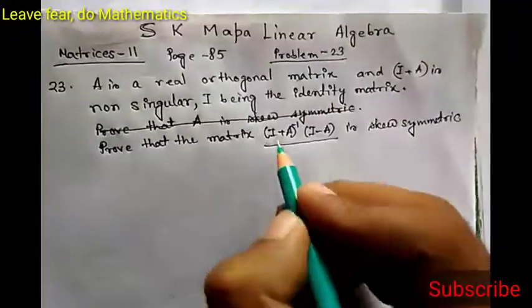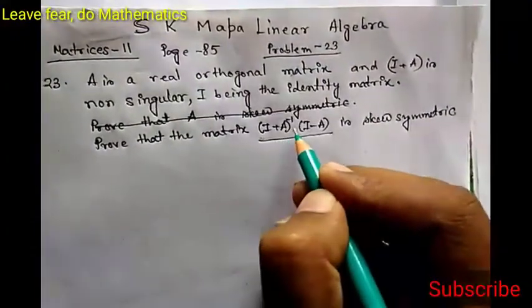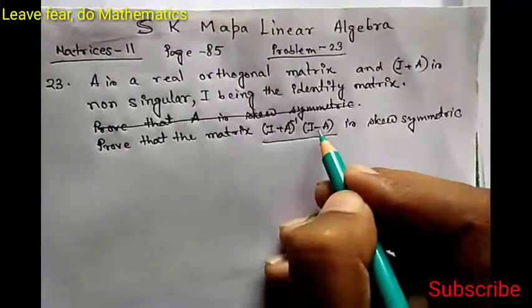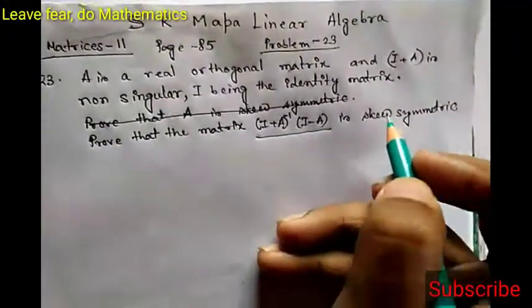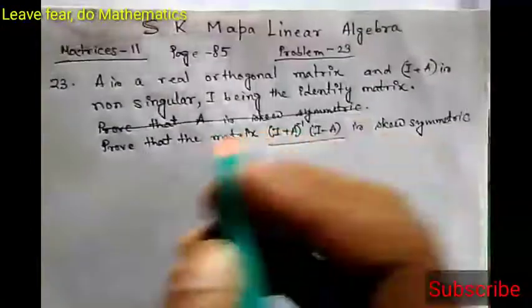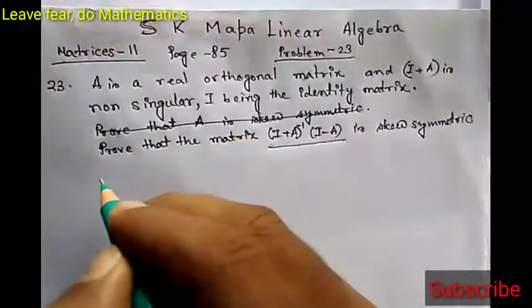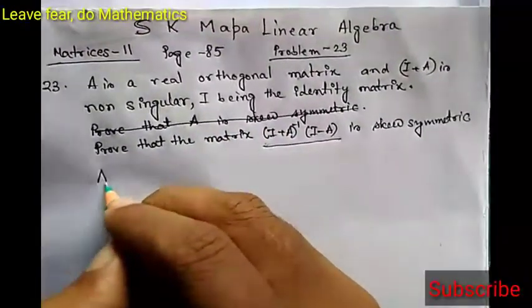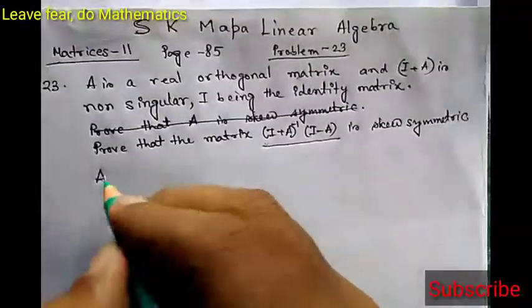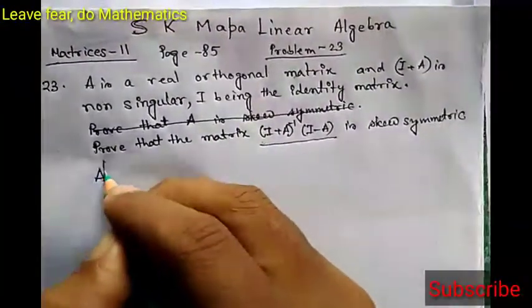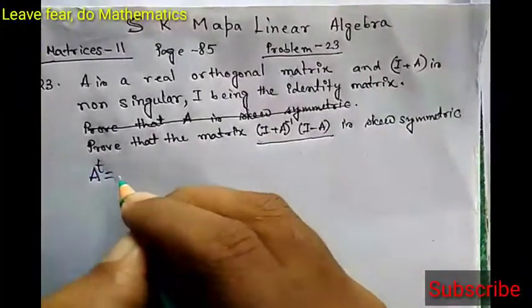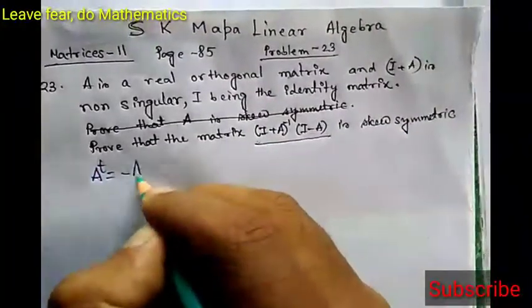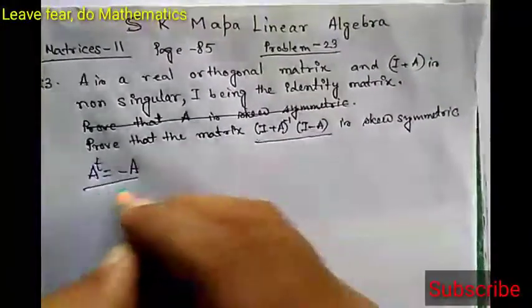We have to prove that (I plus A) inverse into (I minus A) is skew symmetric. What does skew symmetric mean? A matrix A is said to be skew symmetric if A transpose equals minus A.